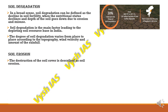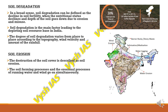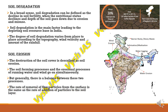Soil erosion is the destruction of soil cover. The erosion processes of running water and wind go on simultaneously, but generally nature maintains a balance — the rate of removal of fine particles from the surface equals the rate of addition of particles to the soil layer. Wind carries soil particles from one region and drops them farther away, and flowing water carries sediments and deposits them elsewhere.